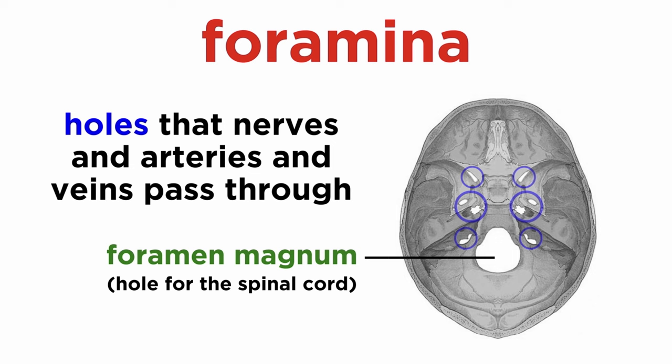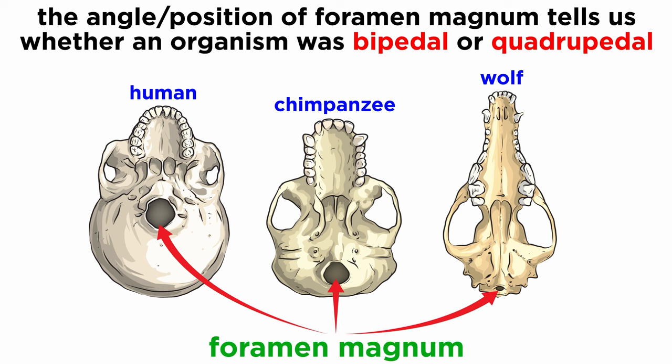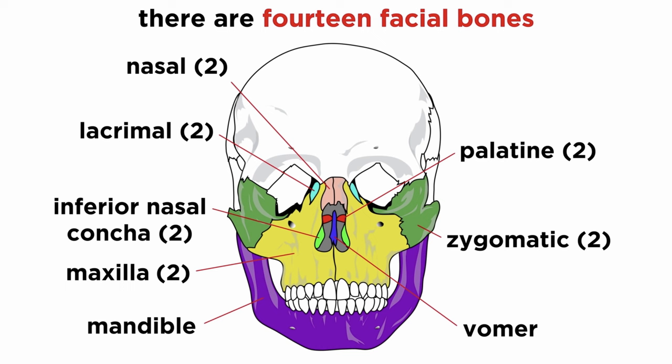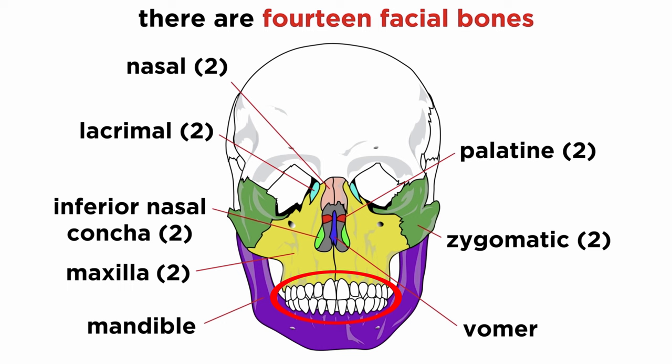At the base of the skull, where the spinal cord exits, is a hole called the foramen magnum. This hole's angle and position can be used to determine the locomotion of ancient hominins, whether they are bipedal or quadrupedal. The bones of the face can also be paired or unpaired. Unpaired bones include the vomer and the mandible, or jaw, and the paired bones include the nasals, lacrimals, palatines, inferior nasal conchi, the maxilla, and the zygomatics, or cheekbones.